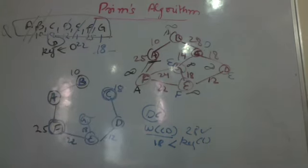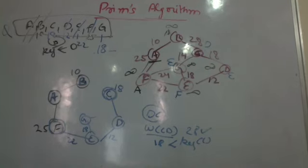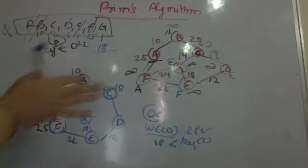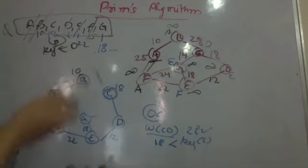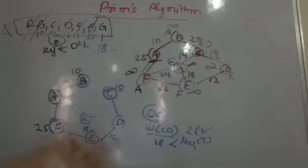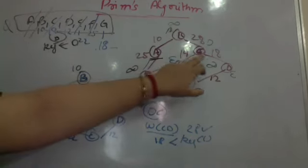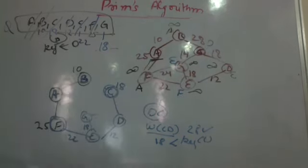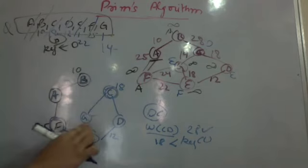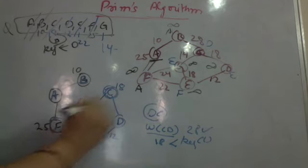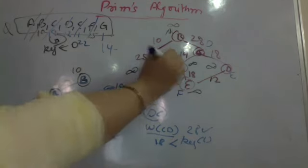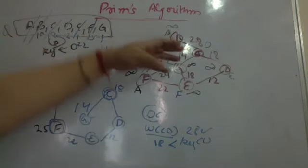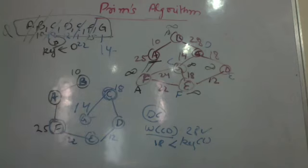Now C and G both have key 18. I pick C. From C, edge C to G can be reached in 14, so key of G is updated to 14 and parent of G becomes C. This gives the final minimum spanning tree. Whether G or C had been picked first, the same edge would have been included in the tree.